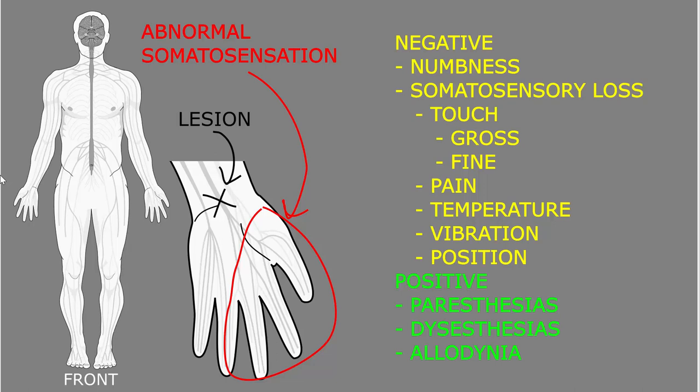In this video, I want to talk about somatosensory symptoms and signs. There are a lot of different terms applied to this, so we'll go over the definitions and distinctions between them. A symptom is an abnormality reported by the patient — also called subjective — and a sign is an abnormality found by a clinician, referred to as objective. Dysfunction of somatosensory axons in nerves or in posterior spinal nerve roots may cause the symptom of numbness or the sign of somatosensory loss, usually of all modalities of the innervated areas.